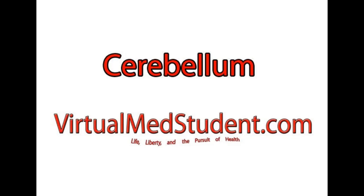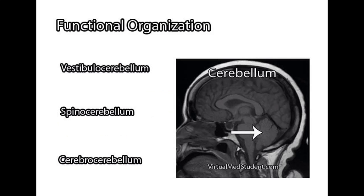In this video, we're going to discuss one of my favorite aspects of neuroanatomy, and that is the cerebellum. The cerebellum on this MRI that you can see here on the right is basically this cauliflower-looking component of the brain that's hanging off of the back of the brainstem.